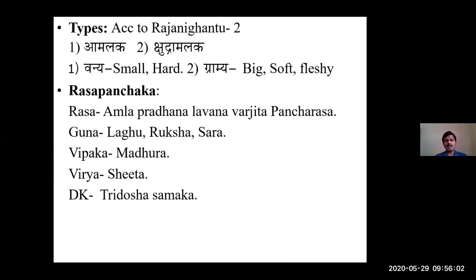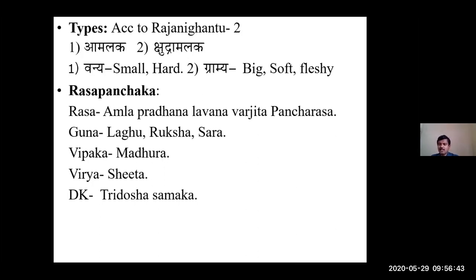The rasa panchaka pharmacodynamics of Amalaki: rasa is amla pradhana lavanavarjita pancharasa. In viva examinations, examiners often ask for drugs having pancharasa - Haritaki has kashaya pradhana lavanavarjita pancharasa, Amalaki has lavanavarjita amla pradhana pancharasa. Rasona itself indicates 'rasa unaha' - one rasa less - meaning five rasas, lavanavarjita katu pradhana pancharasa.